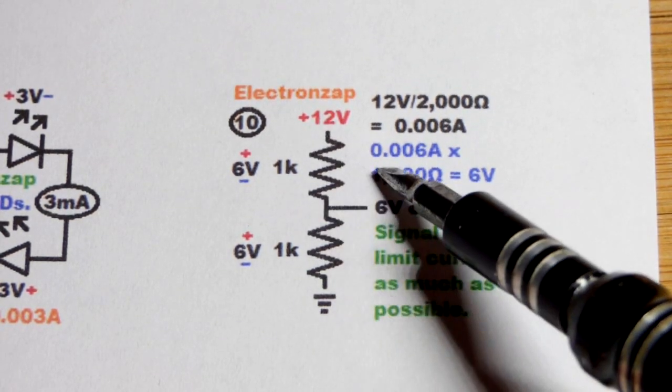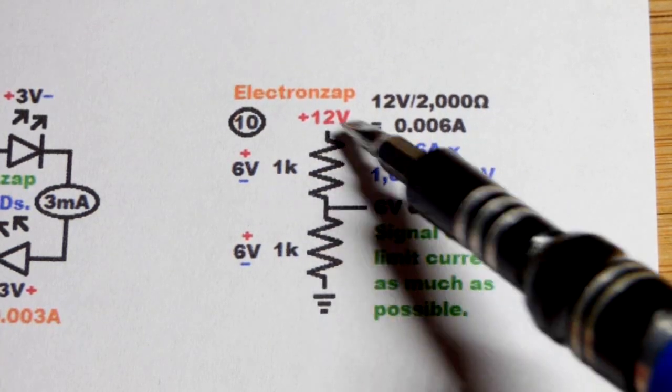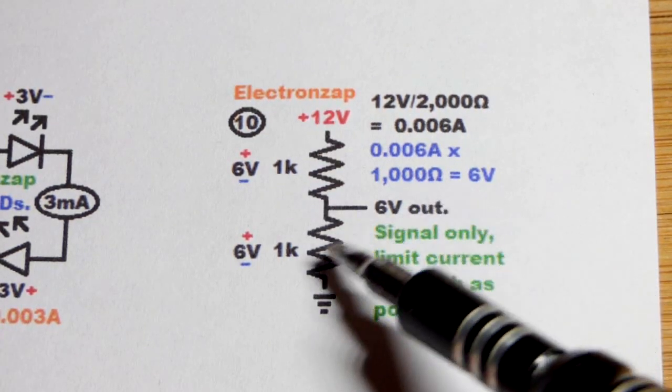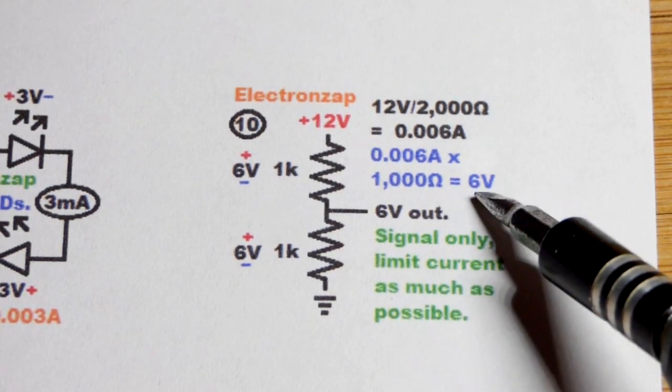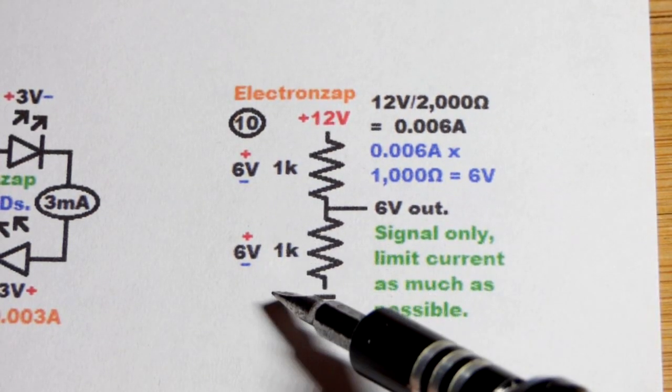Each one of them has 0.006 amps flowing through them. They're in series. They got the same amount of current flowing through. That means there's 6 volts across them. Take that current times the resistance and you get the voltage that's across them.